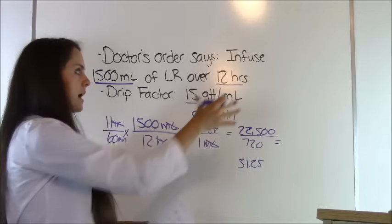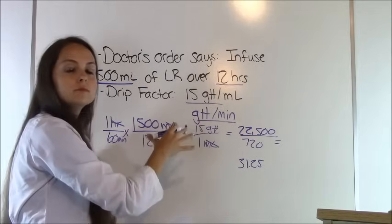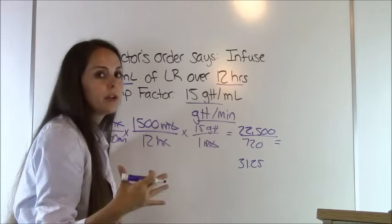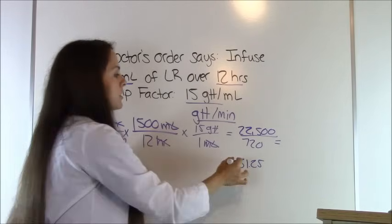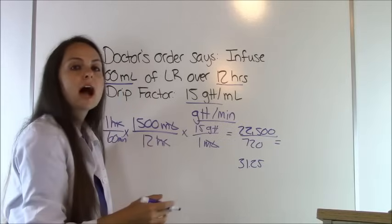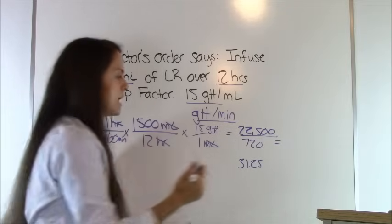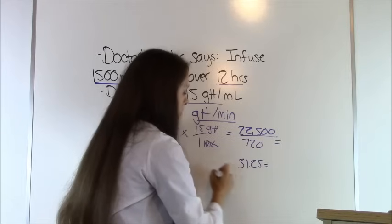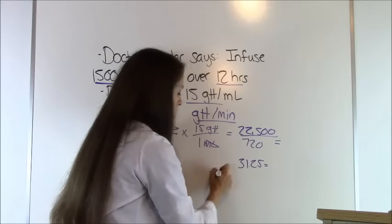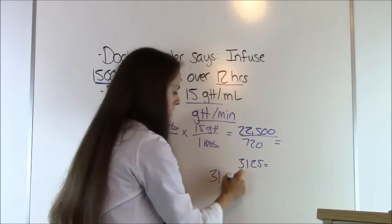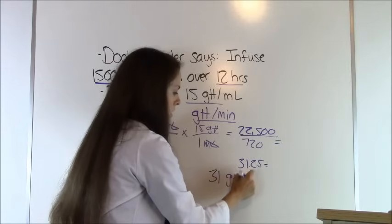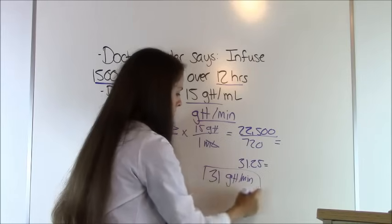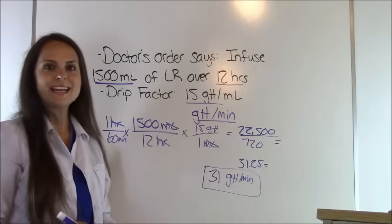Divide 22,500 by 720 and you get 31.25. With drip factors, you always round to the nearest whole number, so 31.25 rounds to 31. Our answer is 31 drops per minute.